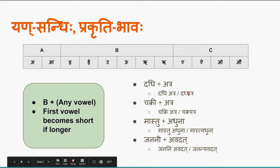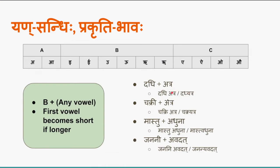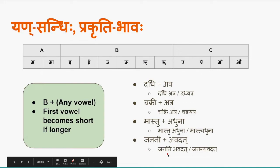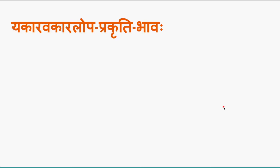In all these cases — wherever prakriti bhava applies — there is a possibility of sandhi but we don't apply it. So: 'dadhi atra', 'chakri atra', 'mastu adhuna', 'janini avadath' — these are examples of en sandhi prakriti bhava. The next category is yakara-vakara lopa prakriti bhava, the third category of prakriti bhava.